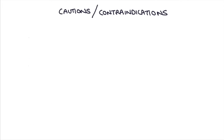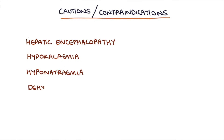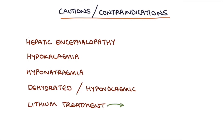Finally, a few cautions and contraindications: use with caution in hepatic encephalopathy, patients with hypokalemia, patients with hyponatremia, dehydrated or hypovolemic patients. In patients on lithium treatment, loop diuretics can increase the lithium level in the blood, so it's worth being aware of that if you start to use loop diuretics in these patients.